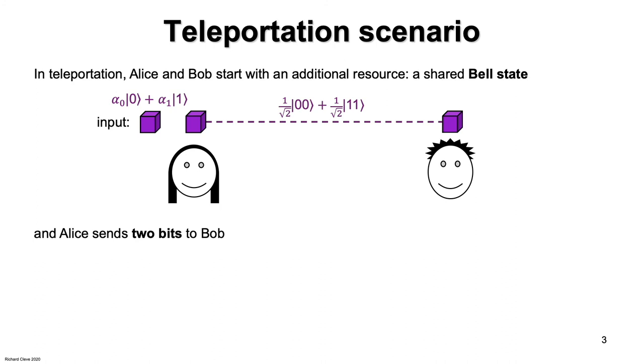She performs some operations, say measurements, in order to produce two classical bits, which she sends to Bob. And based on those two classical bits, Bob is supposed to produce the original state that Alice receives. This looks maybe a little bit strange, but it can be made to work.